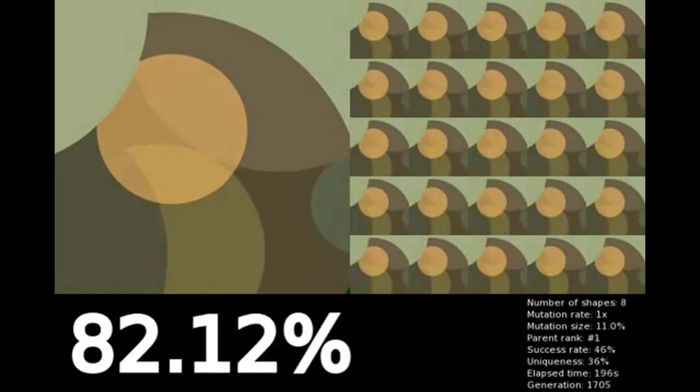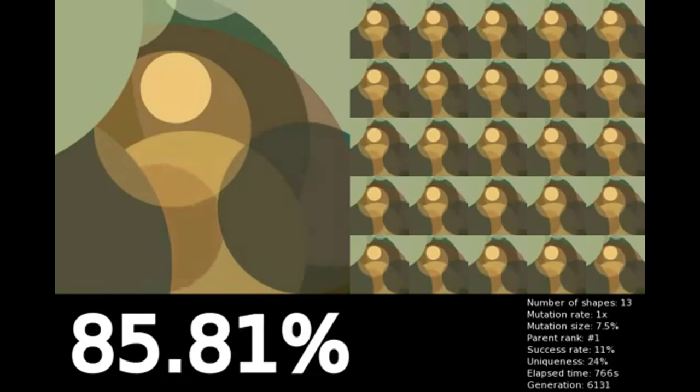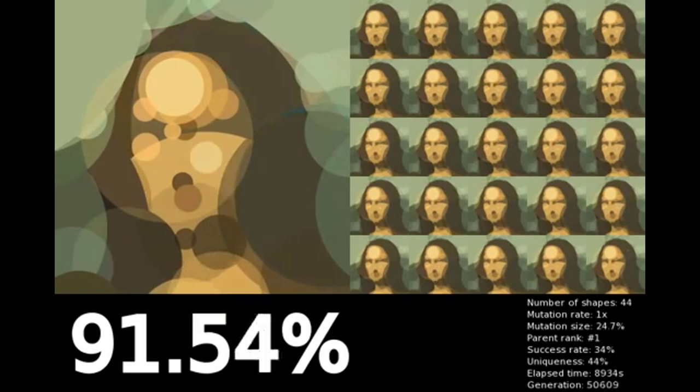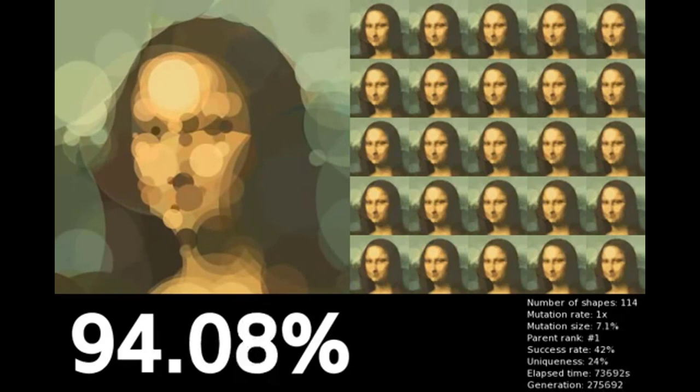The algorithm adds more and more shapes as it tries to increase the similarity to the actual Mona Lisa. Here we see what is the beginning of a mouth. Again, a few bursts of corals representing not-so-beneficial mutations. And voila! The Mona Lisa created by an evolutionary process.